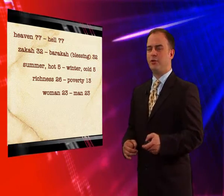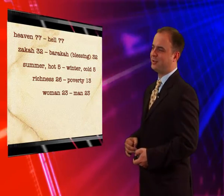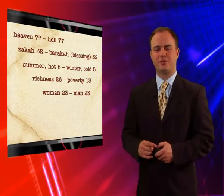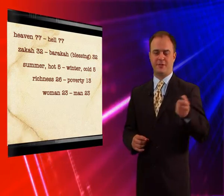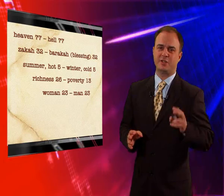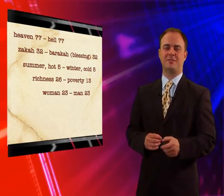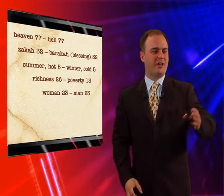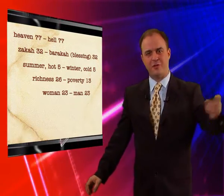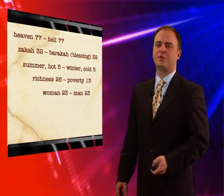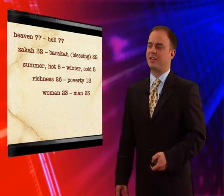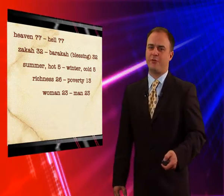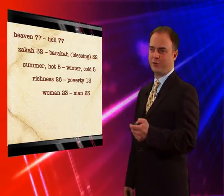Do you have any idea what those numbers represent? As you may recall from previous slides, a human body contains 46 different chromosomes. Half of 46, which is 23, comes from the father, and the other half — also 23 — comes from the mother. The Quran repeats 'woman' and 'man' 23 and 23 times, and adding them gives 46: the chromosome number of a human being.